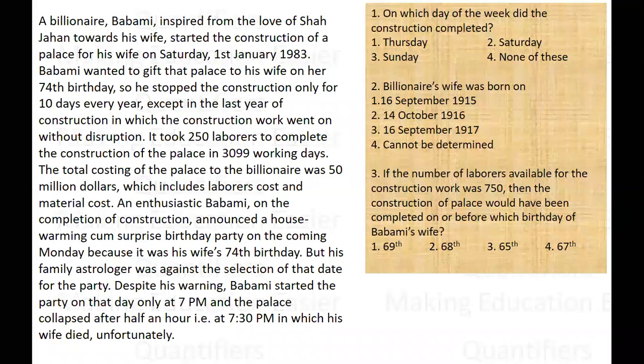It took 250 labourers to complete the construction in 3099 working days — not the total calendar days in the whole time period, but 3099 working days since he was also stopping work for some time. The total cost of the palace to the billionaire was 50 million dollars.